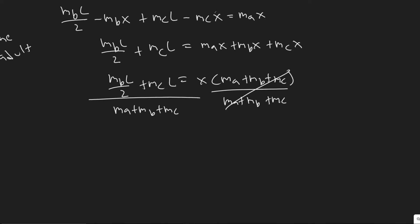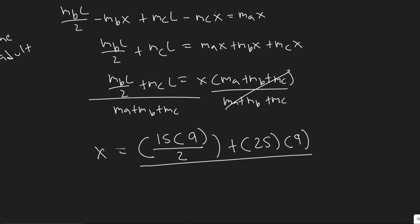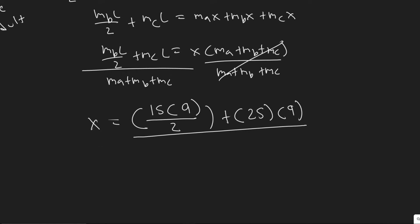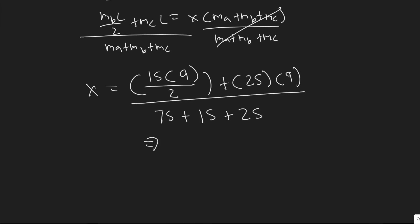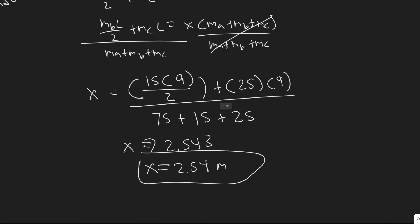Plugging in the values: X equals (15 times 9 divided by 2 plus 25 times 9) divided by (75 plus 15 plus 25). Computing this gives X equals 2.54 meters. This is the distance from the adult to the pivot point when the board's mass is included.